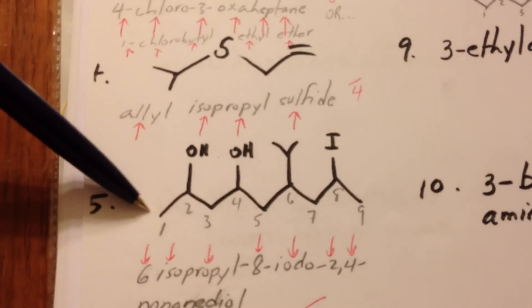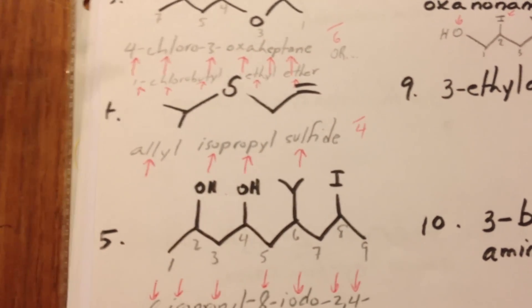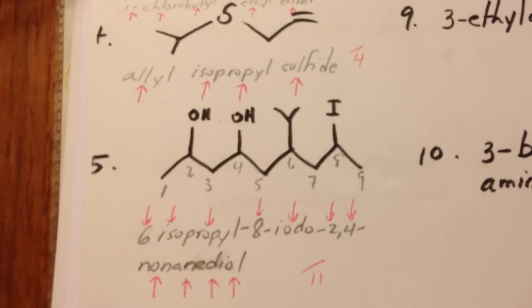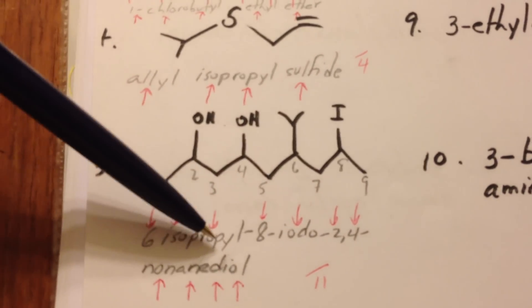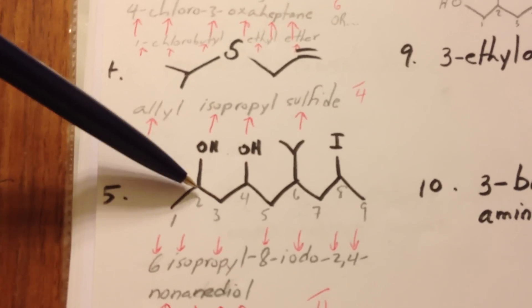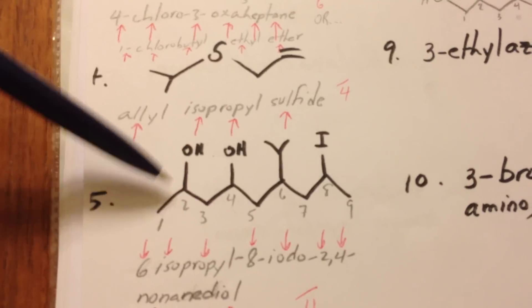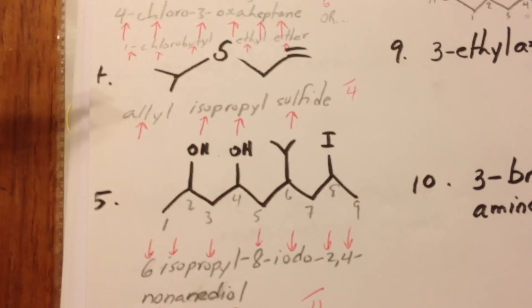This long chain molecule has 9 carbons in it, 2 hydroxyls, an isopropyl, and an iodine atom. So it's a diol. The highest priority is the alcohol groups. So they're occurring at the 2nd and 4th position. We start numbering from the side that'll give the lowest numbering to the highest priority groups on the molecule.